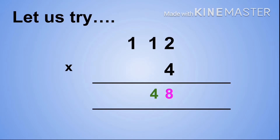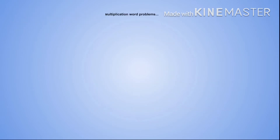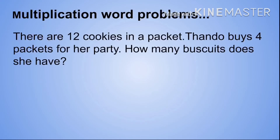Our last step: we need to times our multiplier 4 by our hundreds digit 1. Therefore 1 times 4 equals 4. So our final answer is 448. Now let's work through the following multiplication word problems.